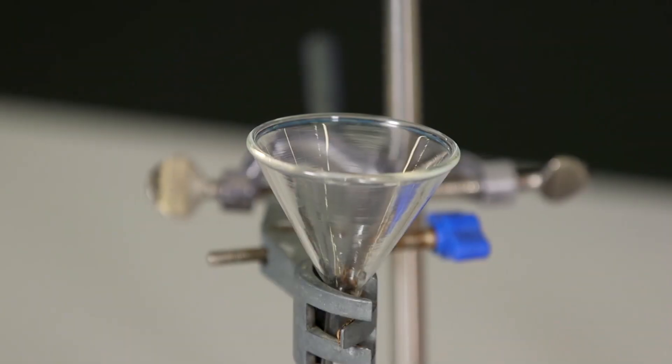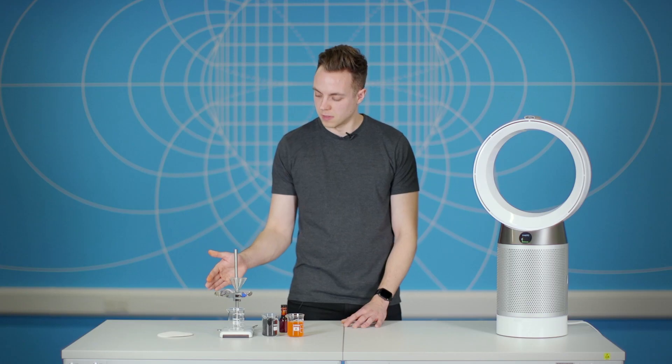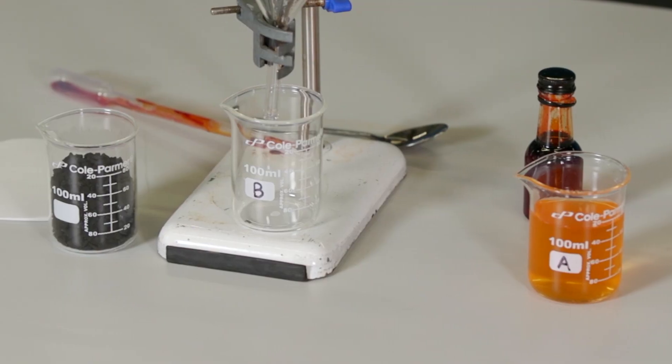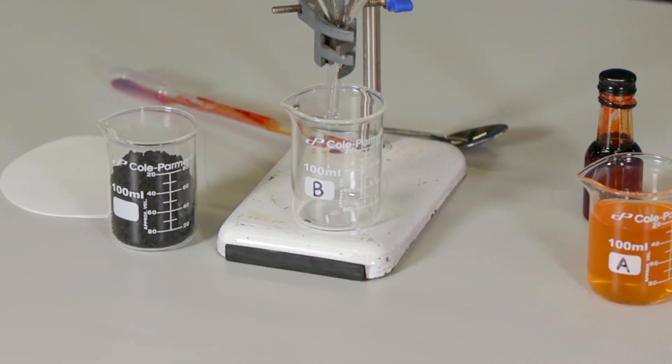Now, what I've got set up in front of me is a clamp stand holding a small glass funnel, some circular filter paper, which I'm going to place inside the funnel, and an empty glass beaker underneath to catch the water we're going to pour through.